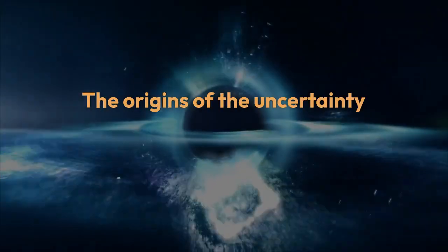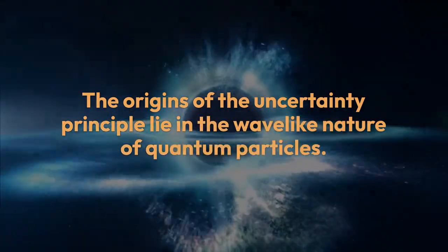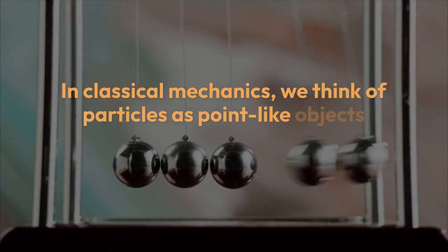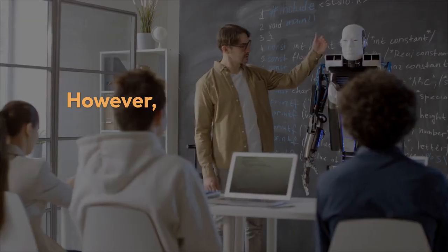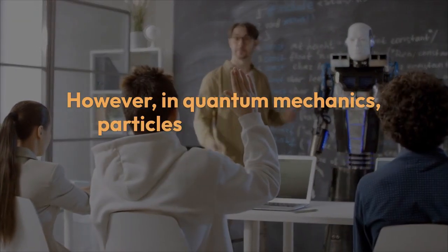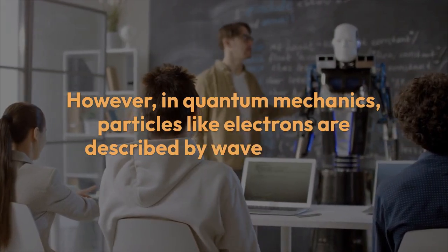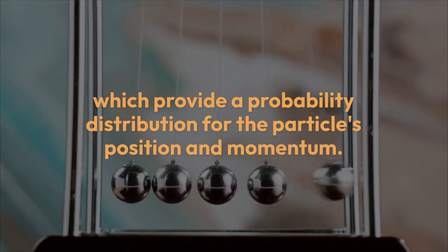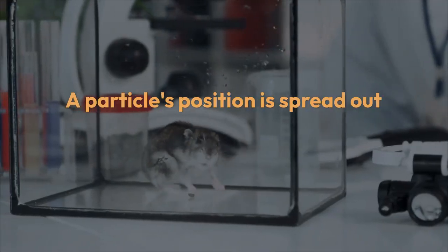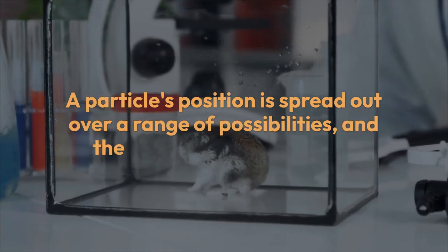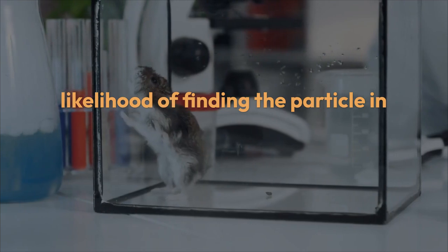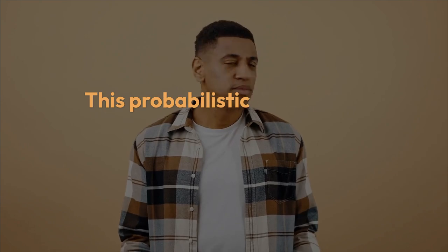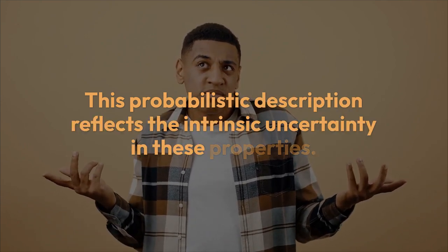The origins of the Uncertainty Principle lie in the wave-like nature of quantum particles. In classical mechanics, we think of particles as point-like objects with definite positions and velocities. However, in quantum mechanics, particles like electrons are described by wave functions, which provide a probability distribution for the particle's position and momentum. A particle's position is spread out over a range of possibilities, and the wave function gives the likelihood of finding the particle in a particular location or with a particular momentum. This probabilistic description reflects the intrinsic uncertainty in these properties.